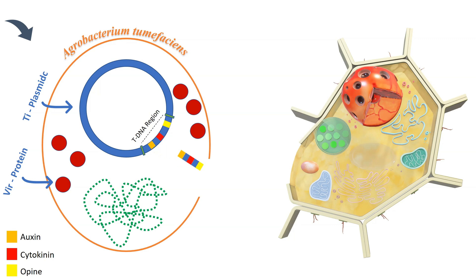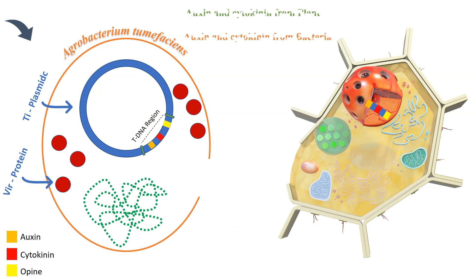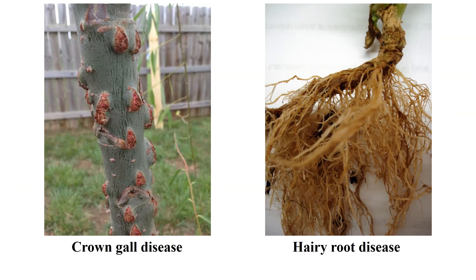When the plant cell containing T-DNA from the bacteria undergoes transcription, it will transcribe both auxin and cytokinin, resulting in the overexpression of these genes. Examples of this overexpression are crown gall disease and hairy root disease.